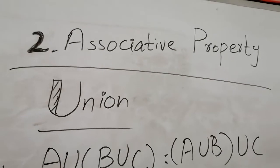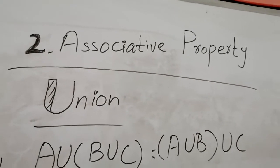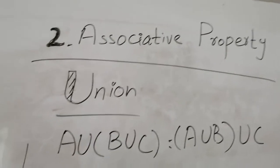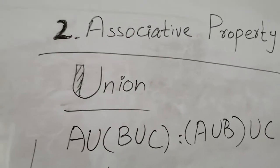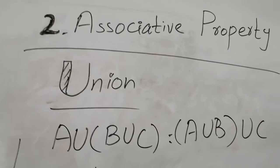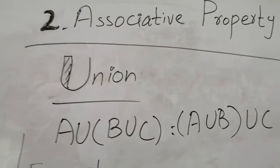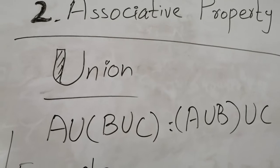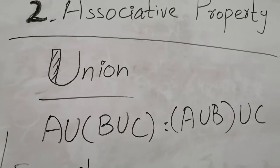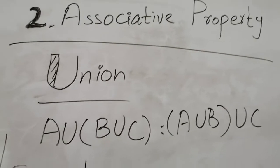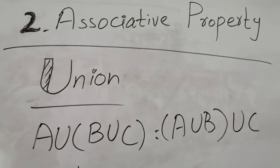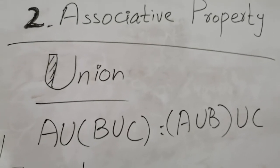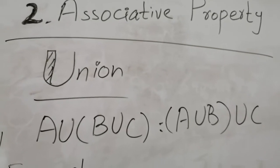Now we discuss the associative property for union. In the associative property, the brackets change — the order of grouping changes. A union (B union C) equals (A union B) union C. Whether you first take B union C and then union with A, or first take A union B and then union with C, there is no difference in the answer.